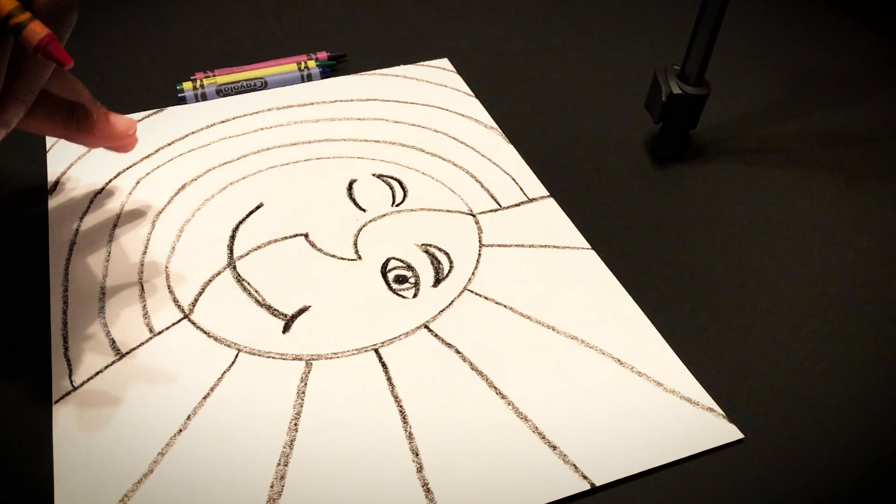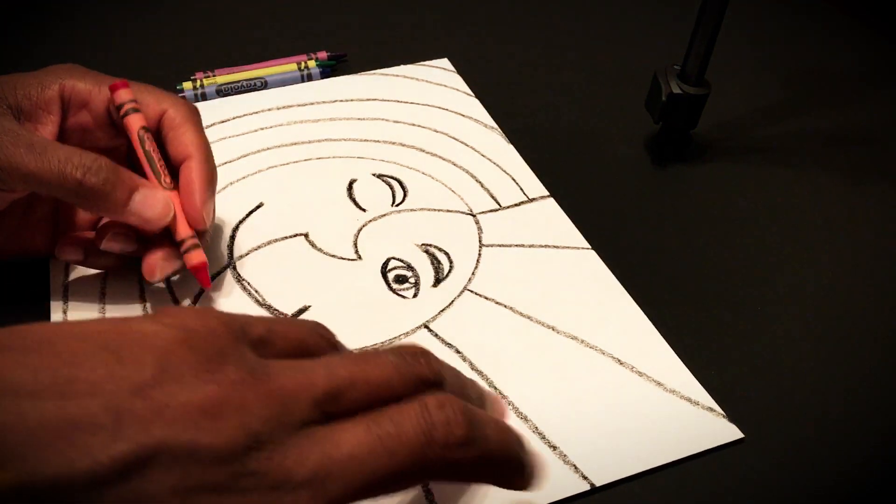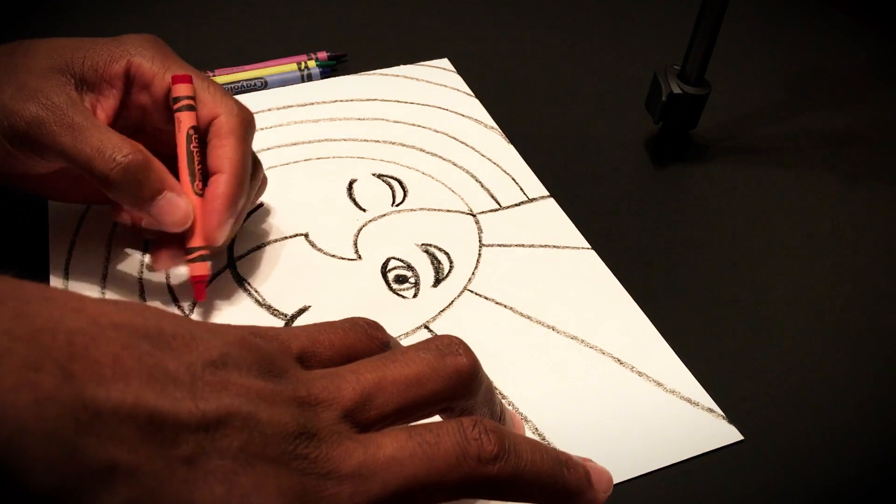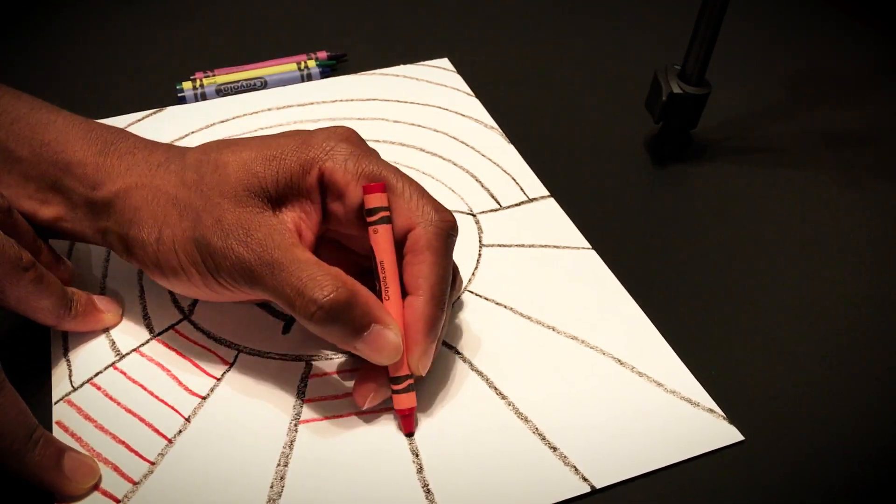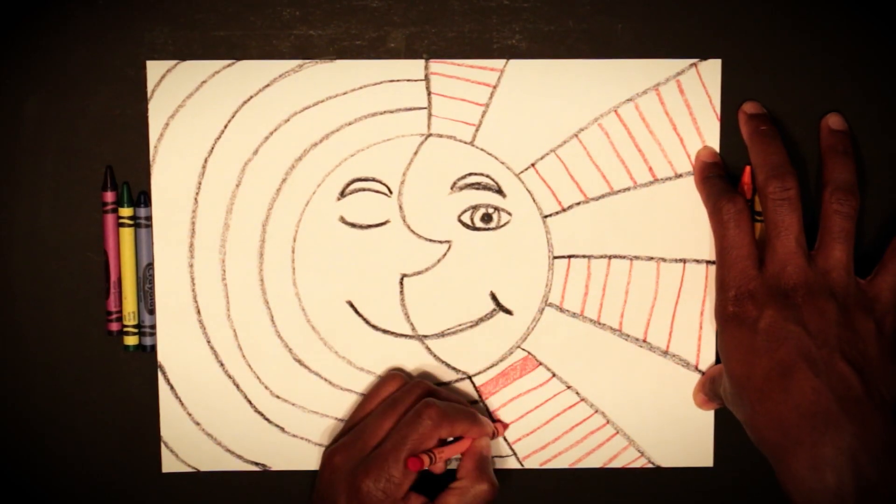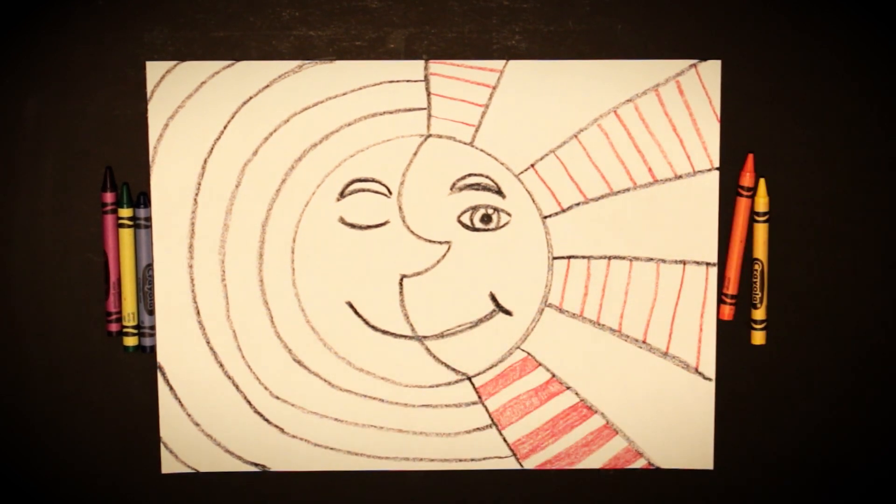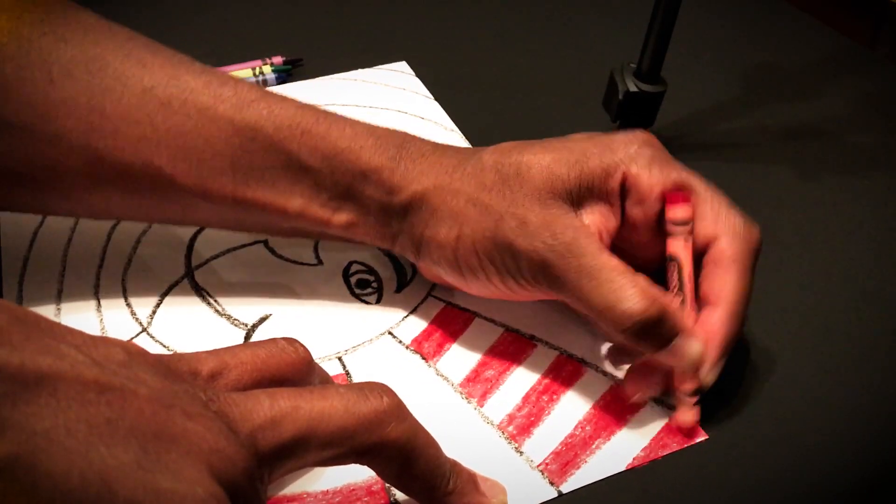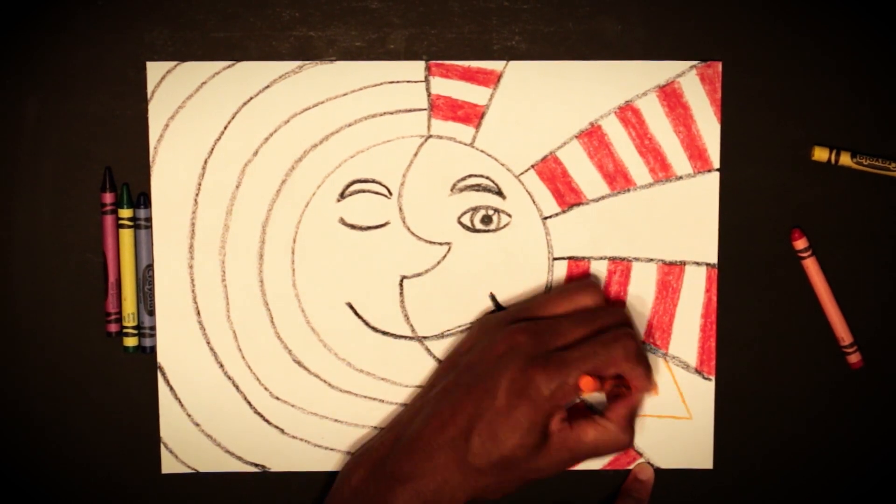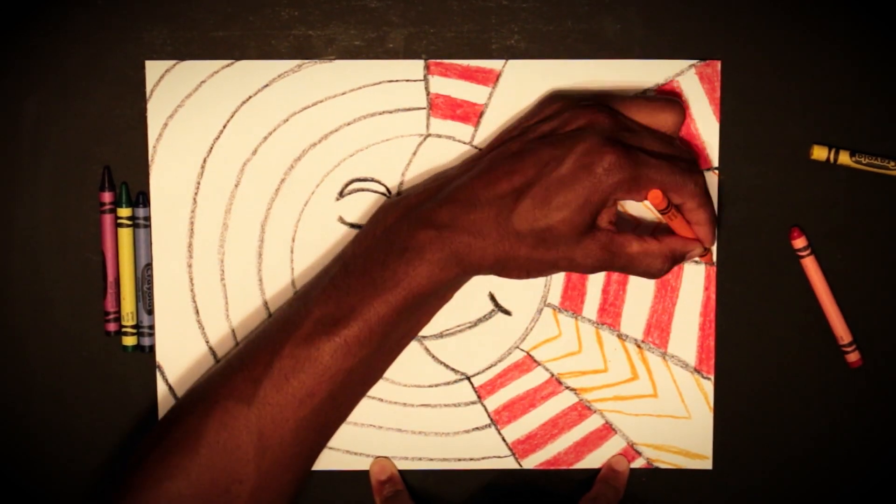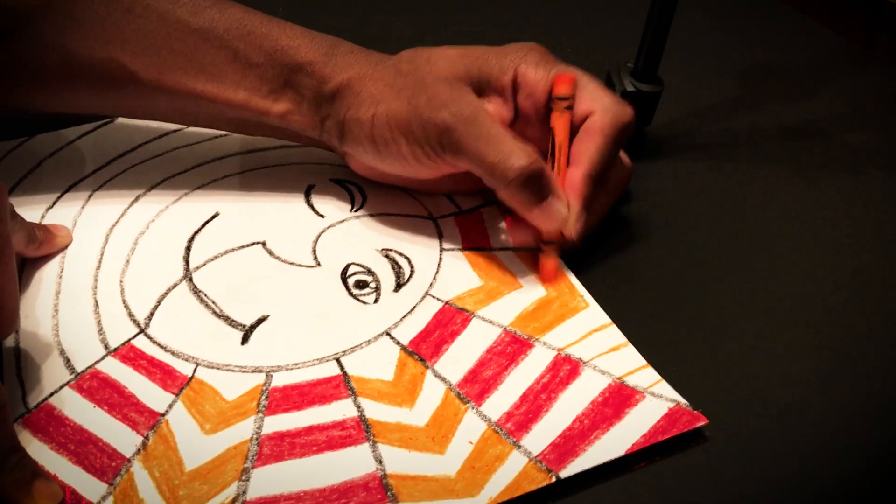So we're going to use our red, yellow, and orange to create some different patterns inside of our sun rays.